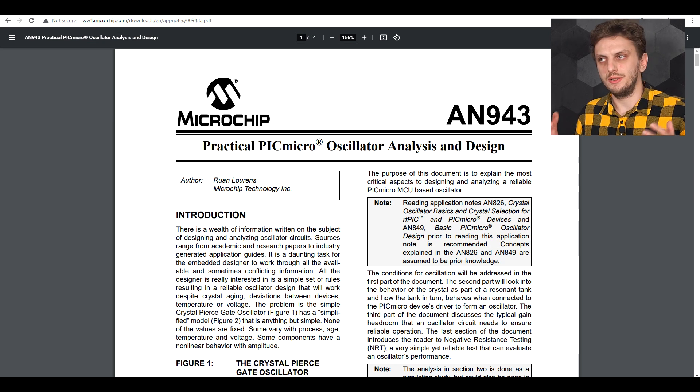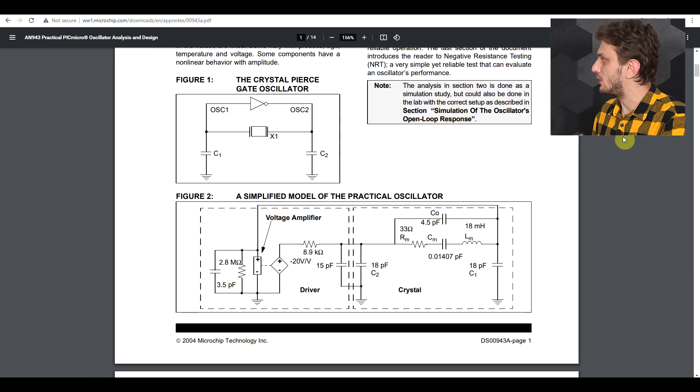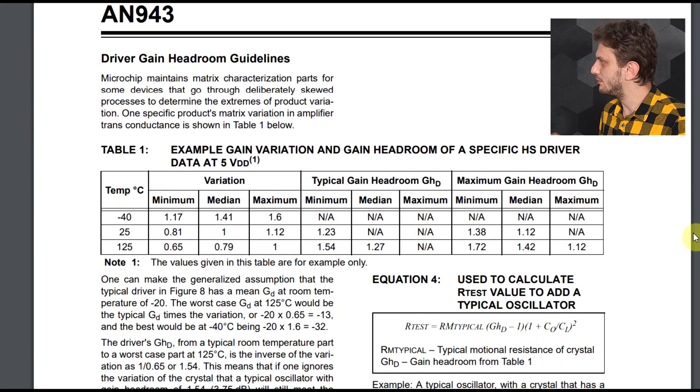Now to get an idea of just how much the gain of your amplifier can vary, I found this application note from Microchip, application note 943, in which they analyze how the crystal oscillator can be modeled. And one of the really interesting pieces of information present in this application note is this table, in which they give us an example of how the gain can vary over production lot and temperature. So if we start off with a generic average value of 1 at 25 degrees, based on production lot this can vary up and down by about plus 12 minus 19 percent at 25 degrees. But then if we take into consideration also temperature, we can reach an extreme maximum at minus 40 degrees of 60 percent more than our average at 25, and we can get to an extreme minimum of minus 35 percent at 125 degrees. And if we compare the absolute minimum and the absolute maximum, we get an almost one to three ratio.